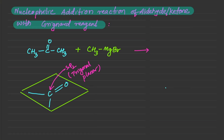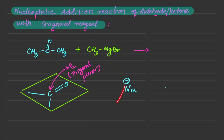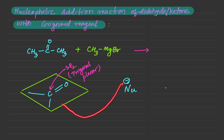If we have a nucleophile that is negatively charged, the nucleophile could come from the top or from the bottom. The question is: why do we draw the arrow towards the carbon atom?